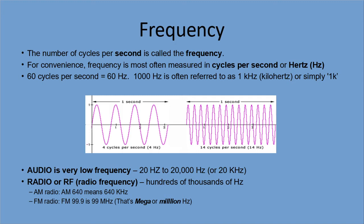A thousand hertz will often be referred to as one kilohertz, or simply one k. And of course a million hertz is a megahertz, which you've heard about in your FM radio signals — your favorite radio station maybe at 99.9 megahertz. That's what that's all about.